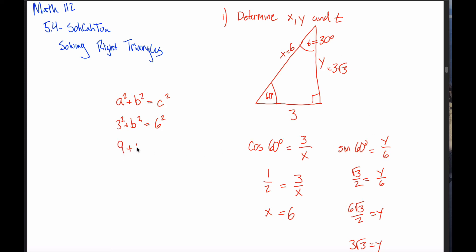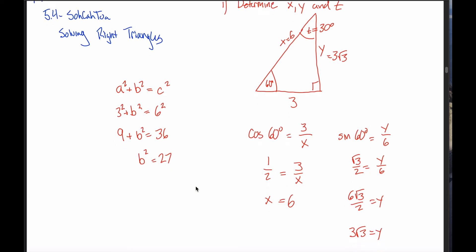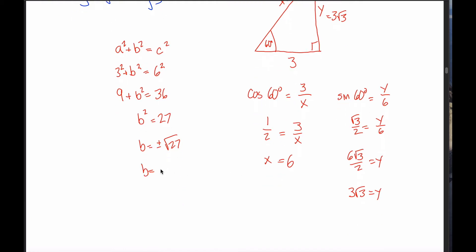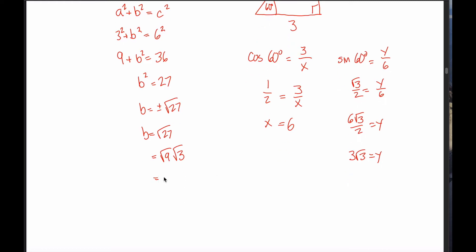After I had solved for the hypotenuse being equal to 6, I could say 3 squared plus b squared equals 6 squared. I get 9 plus b squared equals 36. Subtracting 9 from both sides gives b squared equals 27, so b equals the square root of 27. Since I'm talking about a side length it must be positive. The square root of 27 is the square root of 9 times the square root of 3, and the square root of 9 is 3, so I get 3 root 3 — the same answer.